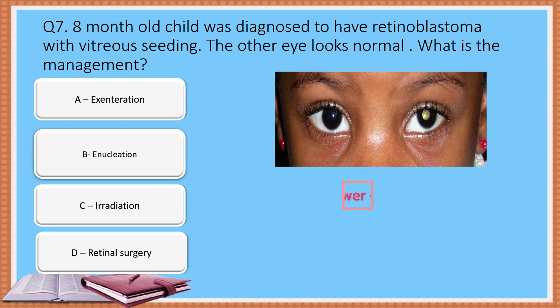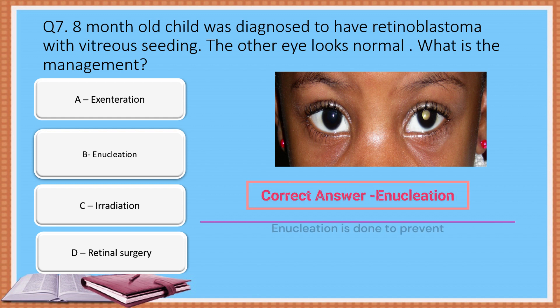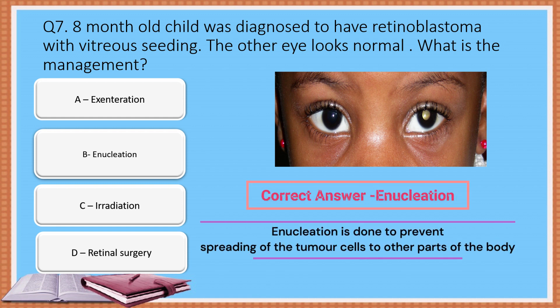The correct answer is Option B: Enucleation. Enucleation is done to prevent the spread of tumor cells to other parts of the body.